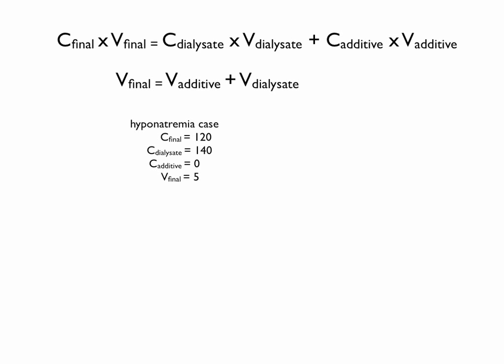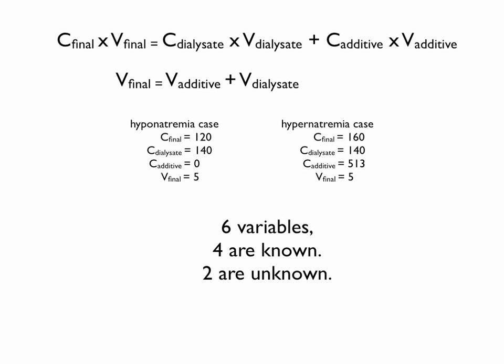We'll do two cases: a hyponatremia case in which the final concentration needs to be 120, and a hypernatremia case in which the target sodium concentration of your dialysate is 160. We have six variables, four of those variables are known, two of them are unknown, and we have two equations, so we should be able to solve this with algebra.